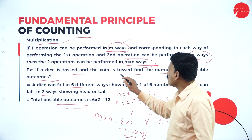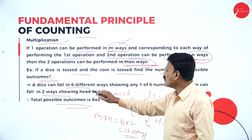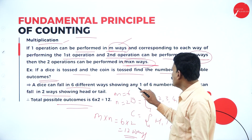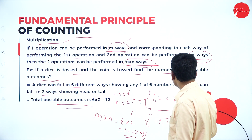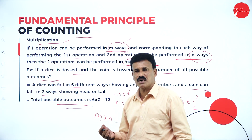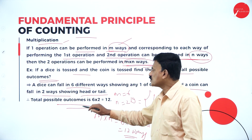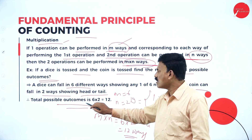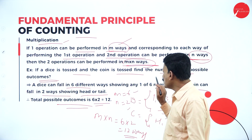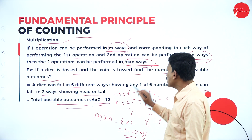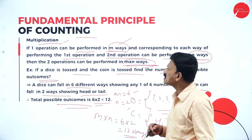If a die is thrown and a coin is tossed, find the number of all possible outcomes. A die can fall in six different ways showing any one of 1, 2, 3, 4, 5, and 6. When a coin is tossed there are two outcomes: head or tail. Therefore the total possible outcomes is 6 into 2, that is M into N equals 12 ways.